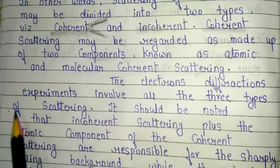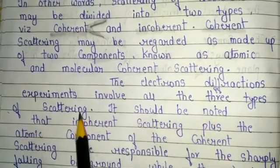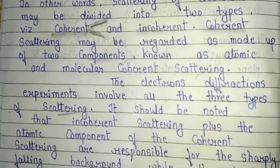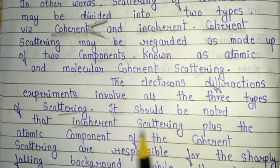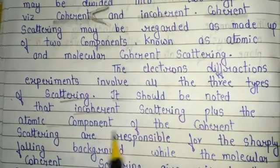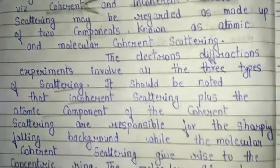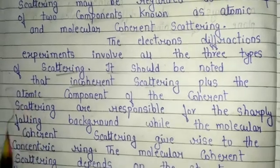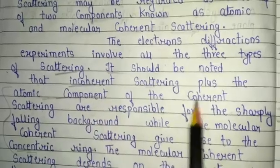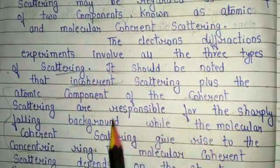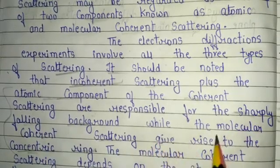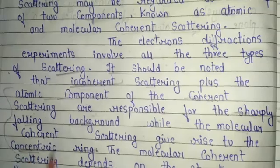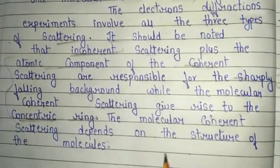The electron diffraction experiment involves all three types of scattering: coherent, incoherent, and the two components of coherent scattering — atomic and molecular. It should be noted that incoherent scattering plus the atomic component of coherent scattering are responsible for the sharply falling background, while the molecular coherent scattering gives rise to the concentric rings. The molecular coherent scattering depends on the structure of the molecule.